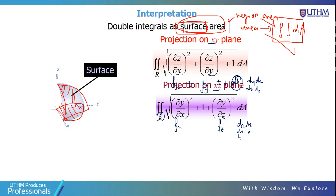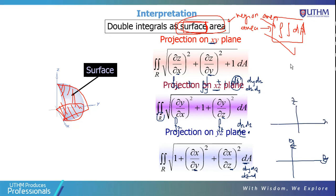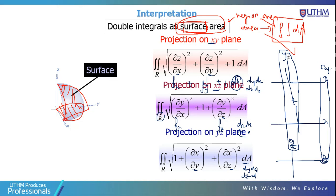Two different things: region area is the projection of the surface onto the XY plane — the flat area below. Surface area is the actual curved surface itself. These require different formulas. Always check whether the question asks for area or surface area.